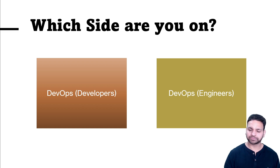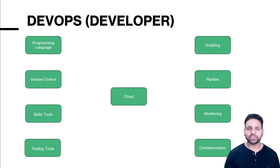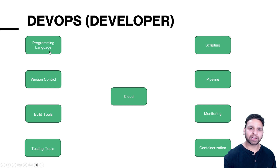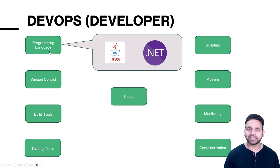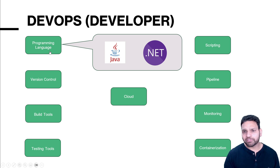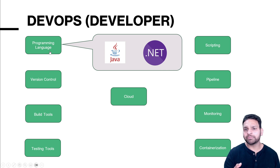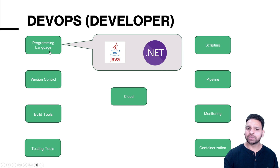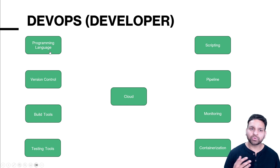If you are a developer who wants to use DevOps, the first thing is learning a programming language. Of course you'll be learning a specific language — here I've shown Java or .NET, but there are multiple languages like Python and PHP. Because you are a developer this is normal for you — this is what you should already be learning. So programming language is done — now you know how to write code.